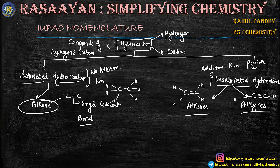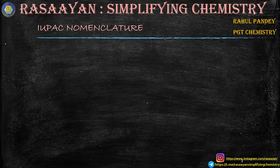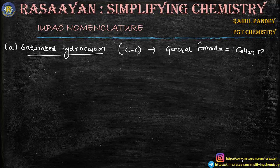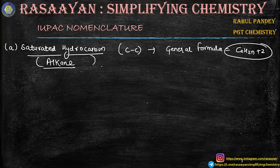Right now we are focusing on nomenclature, so first of all we will be taking saturated hydrocarbons and talking about how these particular compounds are named. One thing is very clear: saturated hydrocarbons contain carbon-carbon single bonds and they are represented by a general formula of CnH2n+2. This is the general formula of saturated hydrocarbon — the alkane. When I say saturated hydrocarbon, I am talking about alkane. While writing the name of a saturated hydrocarbon, we use the primary suffix 'ane'.